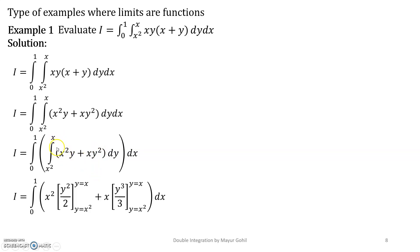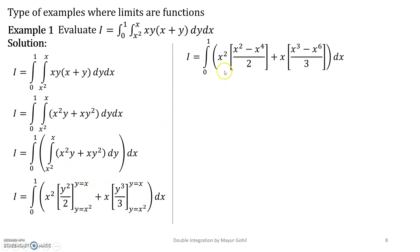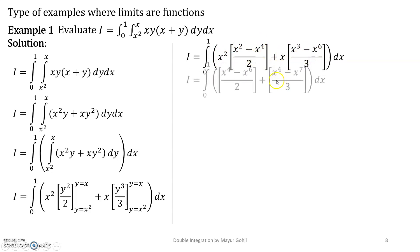Now plug in the limits: y = x² and y = x. In the first term, the upper limit x gives x², and the lower limit x² gives minus x⁴. For the second term, plugging the upper limit gives x³ and the lower limit gives minus x⁶. Then multiply x² and x inside and simplify.